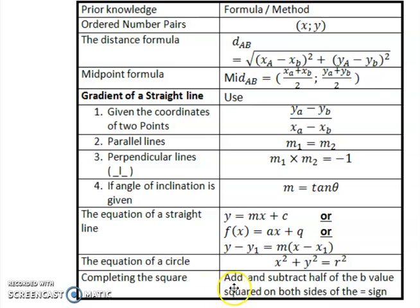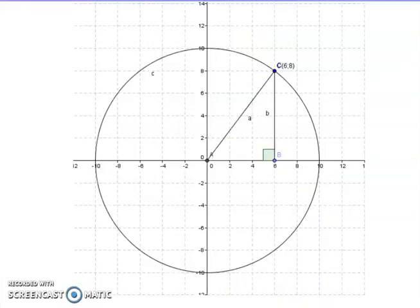We add and subtract half of the B value squared. This is if it's on the same side. If it's on either side of the equal sign, we will add on both sides. As you may have noticed, analytical geometry concerns the Cartesian plane and calculations on the Cartesian plane, so let's get straight into it.